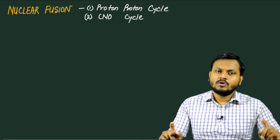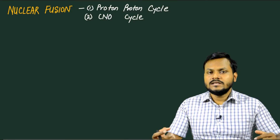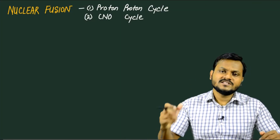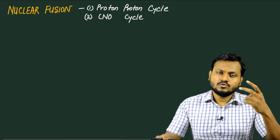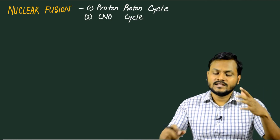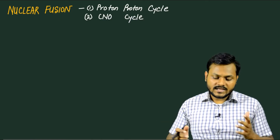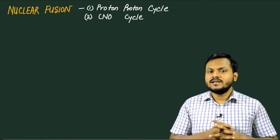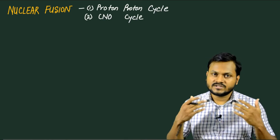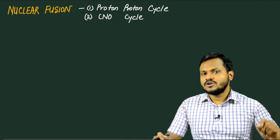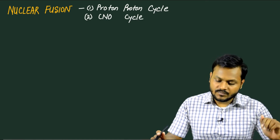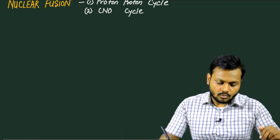Nuclear fusion reactions are usually common in the core of stars. This is the only source of energy in our Sun — the only way energy is produced inside it. There are many different kinds of nuclear fusion reactions which are possible, but two of them are quite common: the proton-proton cycle and the carbon-nitrogen-oxygen cycle. The proton-proton cycle is common in smaller stars like our Sun or stars smaller than our Sun, while the carbon-nitrogen-oxygen cycle is common in stars which are much bigger.